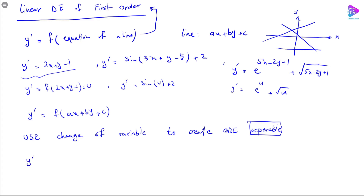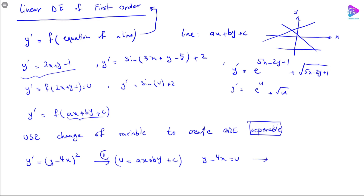Let's look at an example: y prime equal to (y minus 4x) squared. What we're going to do is rewrite this whole linear part as u — in this case u equals y minus 4x. That is step one. In step two we differentiate with respect to x, which gives us y prime minus 4 equals u prime.